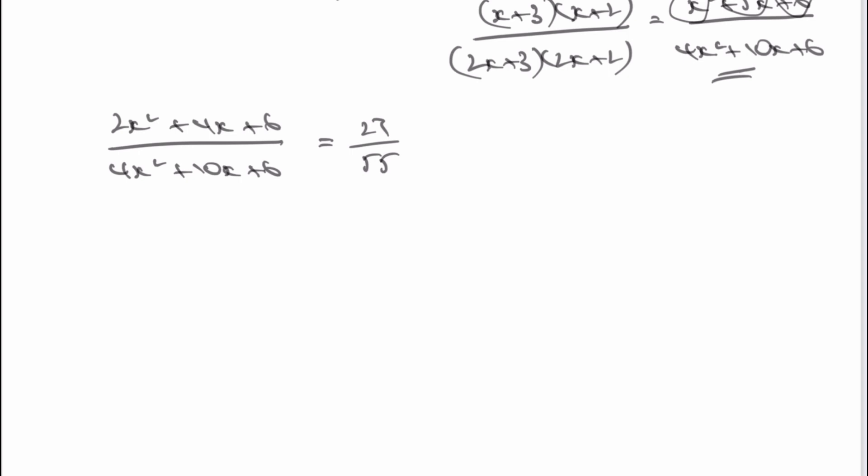The easiest way to deal with this is to cross-multiply. I'm going to solve for x. If I multiply the numerator, 2x squared plus 4x plus 6 by 55, I get 110x squared plus 220x plus 330, and that's equal to multiplying the denominator by 27, that's 108x squared plus 270x plus 162. If we bring everything over to the left-hand side, we end up with 2x squared minus 50x plus 168 equals 0. Divide everything through by 2, so we get x squared minus 25x plus 84 equals 0.